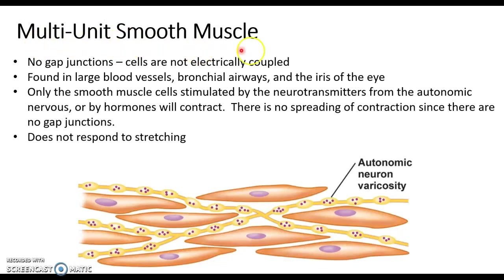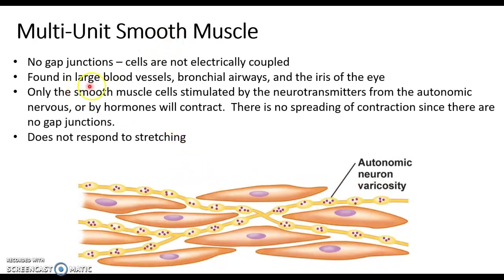In multi-unit smooth muscle, the diffuse junction must extend deep into the smooth muscle tissue because there are no gap junctions. Without gap junctions, the signal can't spread from one cell to another, so all cells must be in direct contact with the diffuse junctions. This type is not found in our organs but in the smooth muscle of our blood vessels, some of our tracts, and the iris of our eye.